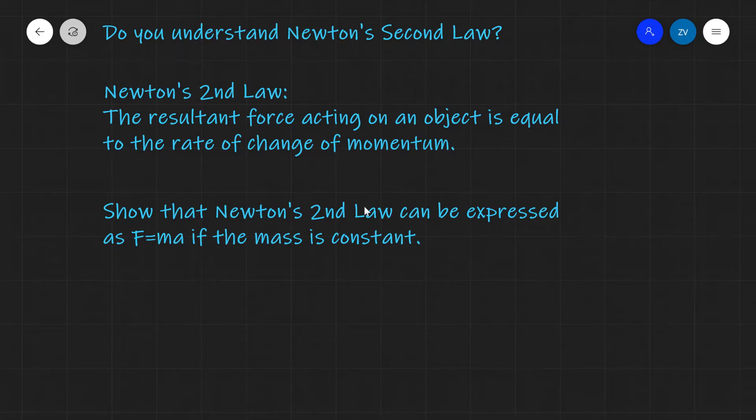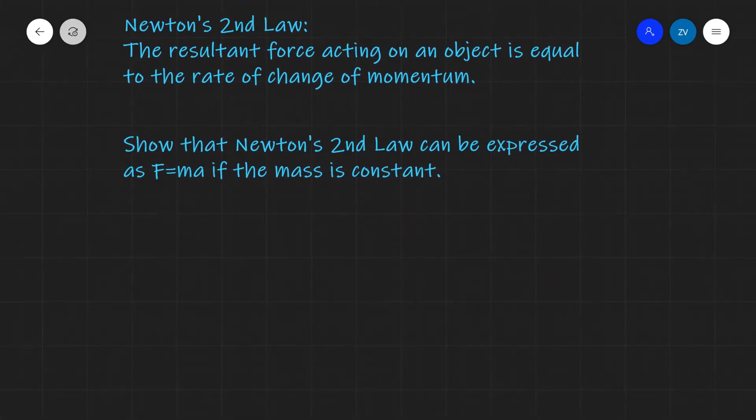Now let's get started by just writing down Newton's second law using mathematics. Anytime we have the rate of change of some quantity, we're going to be dividing by delta t. So the net force, let's just say that this is equal to F, will be equal to delta p, which is our change of momentum, divided by delta t. So overall this quantity here is the rate of change of momentum.